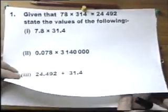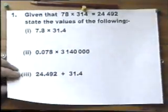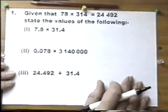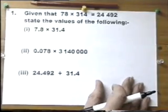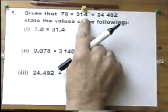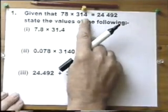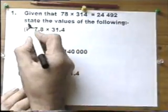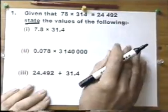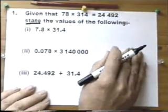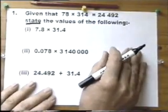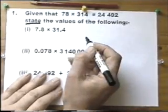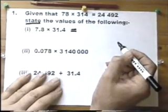This is a non-calculator paper. In this question, we're told that 78 multiplied by 314 is 24,492. We have to use that value to state the answers. The word 'state' means you're meant to be able to just write down the answer, but I'm going to do a little bit of working out along the way.